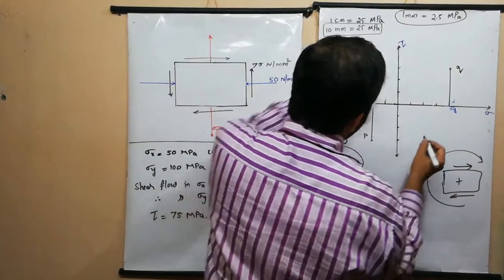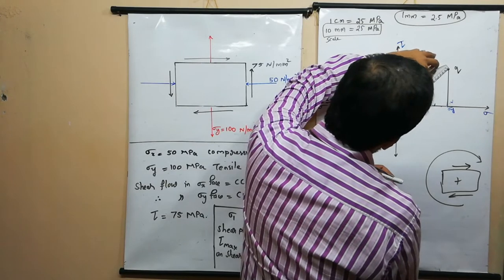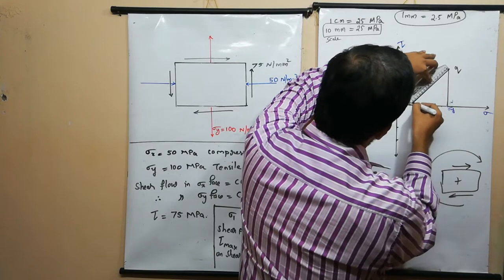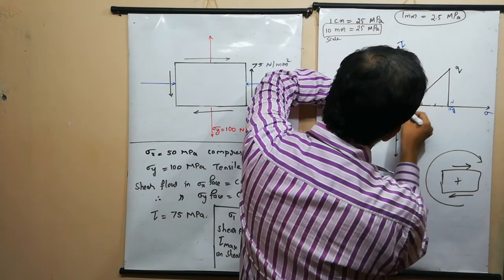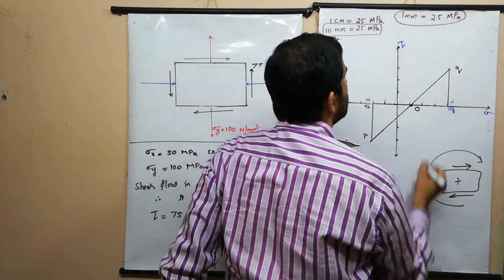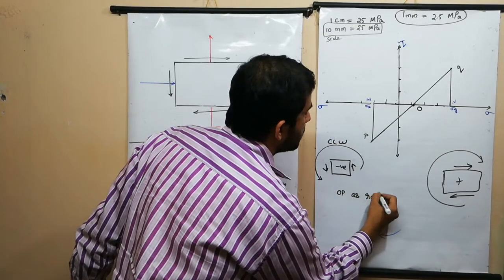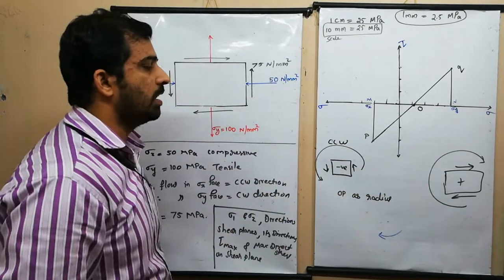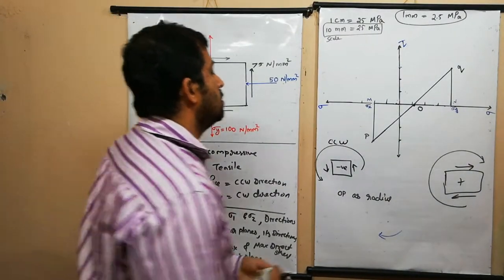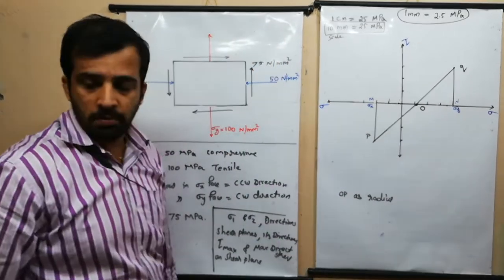Now we can determine the center point by joining P and Q. The midpoint is labeled O. Taking OP as the radius — OP is our reference for measuring all angles — we draw the Mohr's circle.